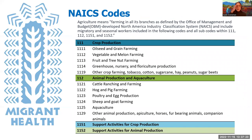The NAICS codes — North American Industry Classification System — were used to develop the definition of agriculture. There are two codes and two sub-codes that meet the definition: 111 (Crop Production), 112 (Animal Production and Aquaculture), 1151 (Support Activities for Crop Production), and 1152 (Support Activities for Animal Production).